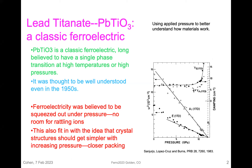Lead titanate is, of course, one of the most classic ferroelectrics. And it was thought for a long time that ferroelectricity should be squeezed out by high pressure. This really makes a lot of intuitive sense, because if you think of rattling ions — like Slater's idea from 1950 — then as you go up in pressure, there's no room for ions to rattle anymore. And so ferroelectricity should go away with pressure. And in fact, that was what was seen in experiments.